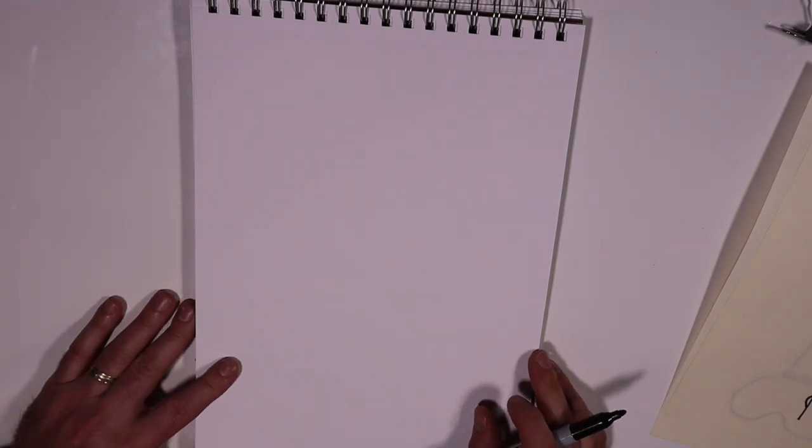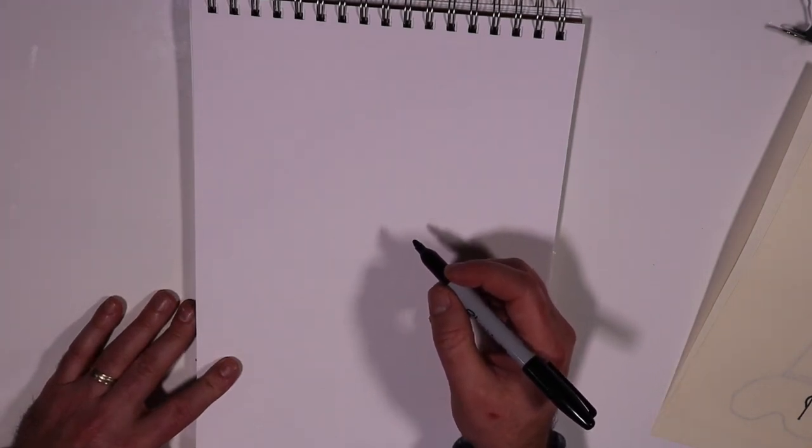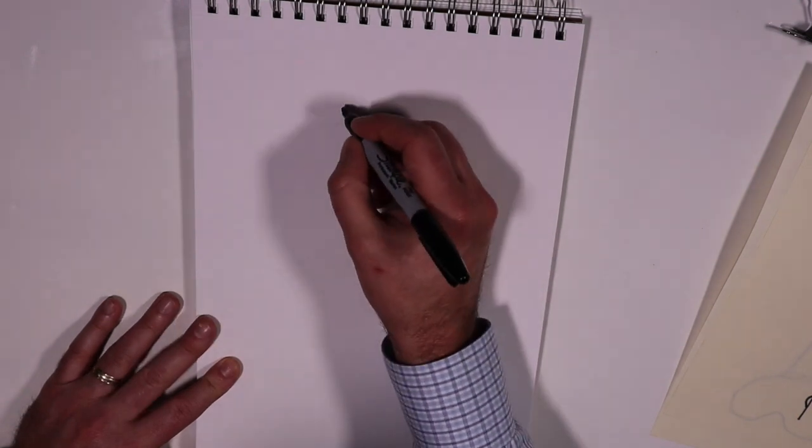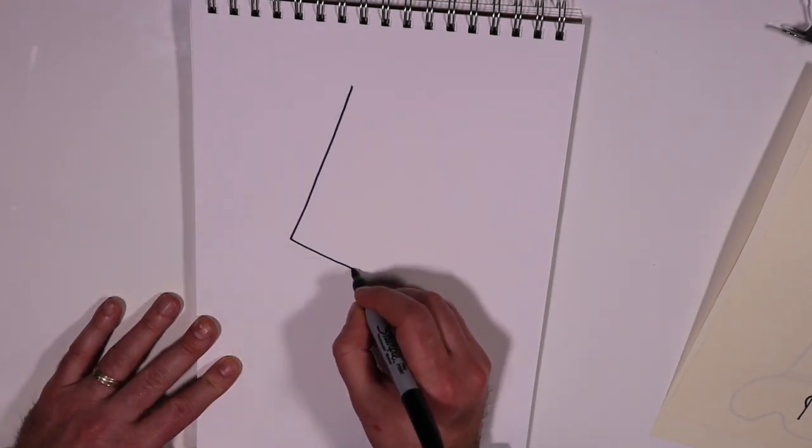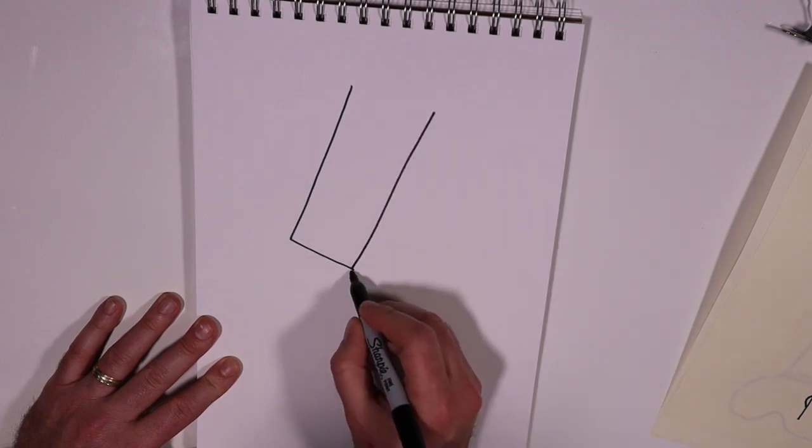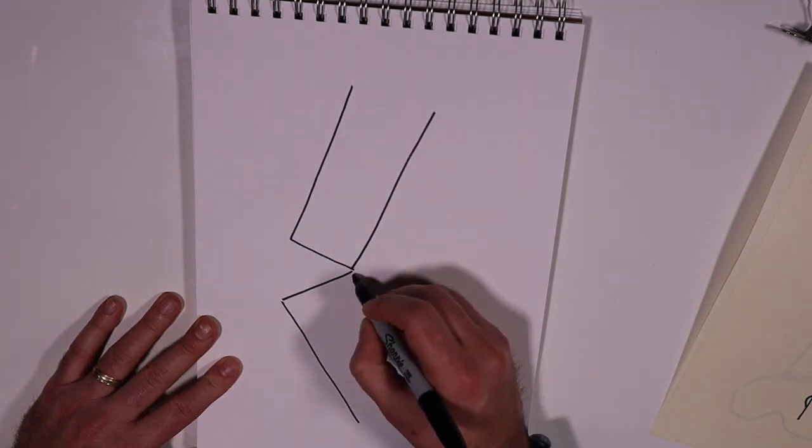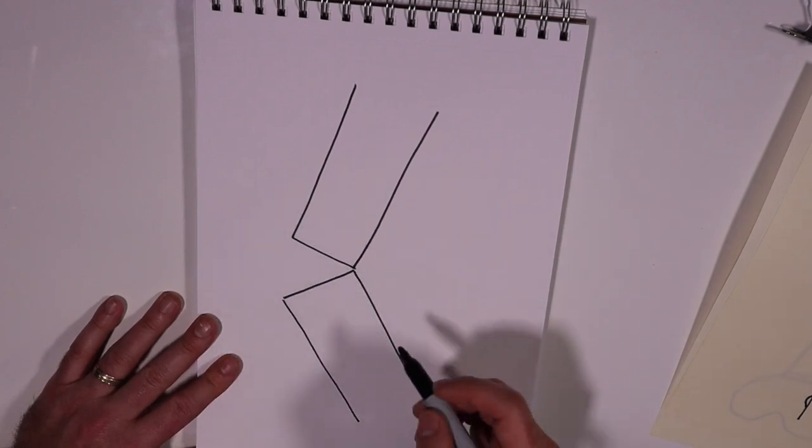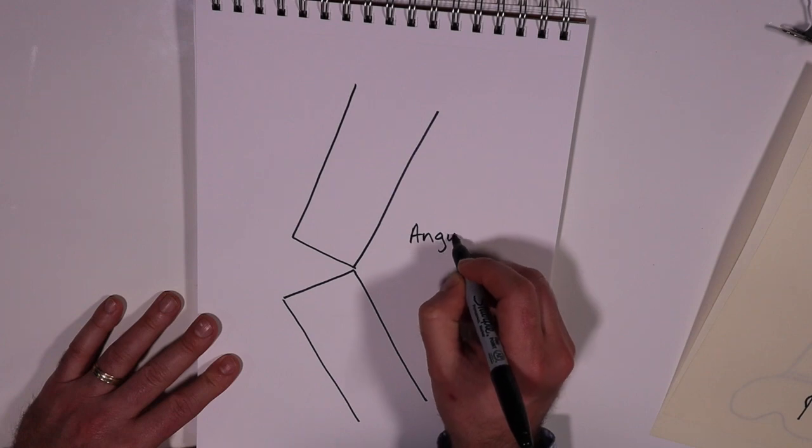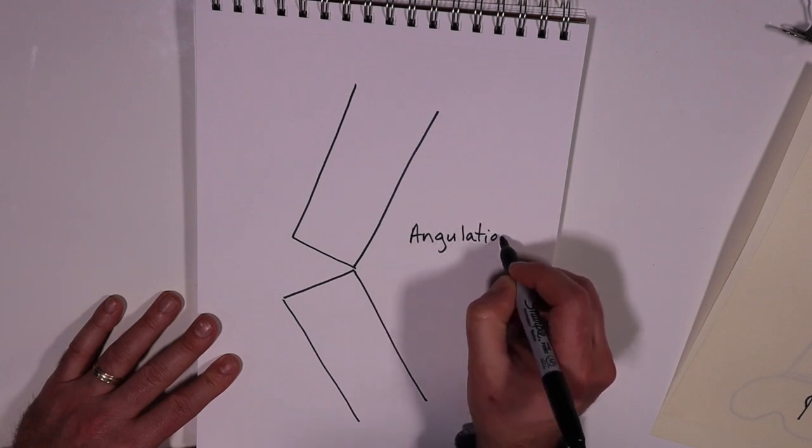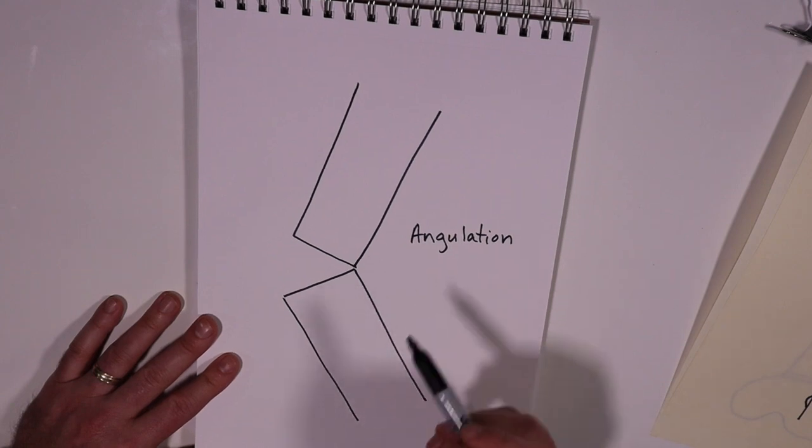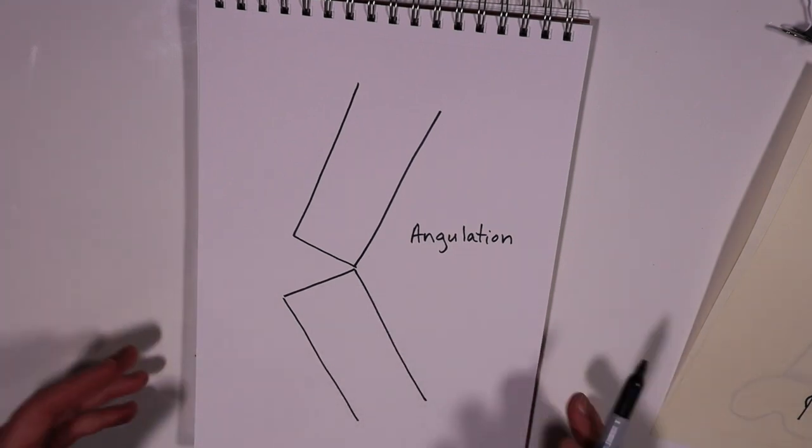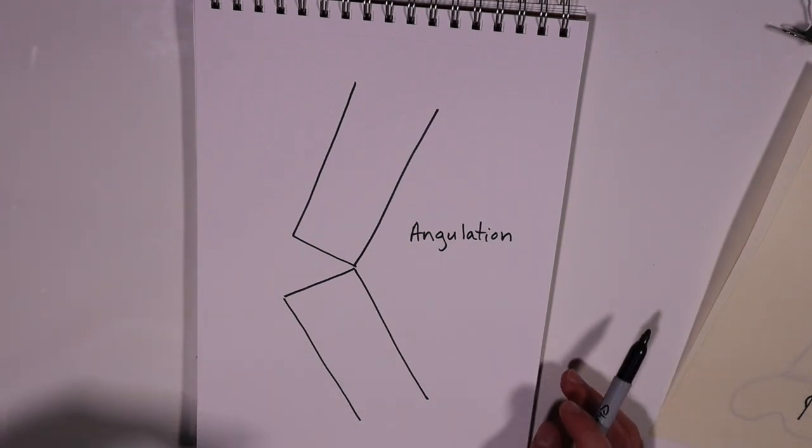So the next thing that we're going to note is whether or not there's any angulation. Now angulation is as simple as it sounds. Is the bone that is typically straight, is it now angled at the fracture site? So I'll draw my shaft here. So this fracture would be angulated, and you can state it noting that it is just simply a yes or no, it's angulated or not. But if you want to be more specific, you can state to what degree it is.